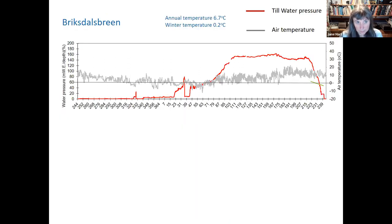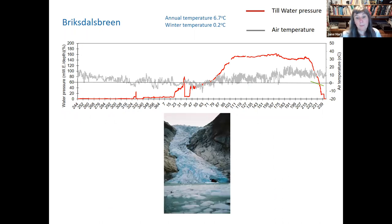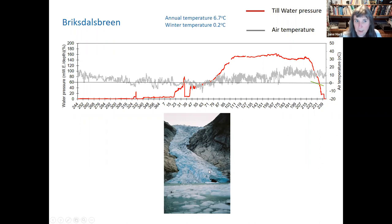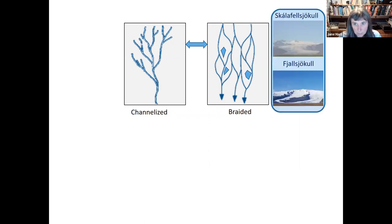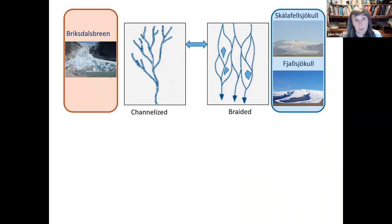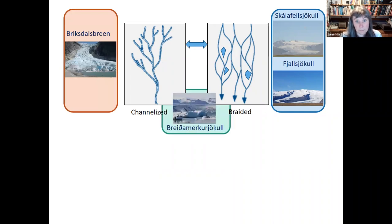Going back to Brickdales Breen — even by looking at it you can see it has a large tunnel at the front. We also did GPR over it and concluded it had a normal channelized system. This shows that not all soft-bedded glaciers have a braided river system. Instead there's a continuum between channelized systems and braided systems in soft-bedded glaciers. Brickdales Breen has this channelized system while Breiðamerkurjökull has an intermediate system between the two.